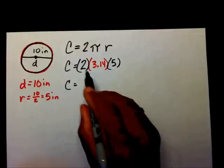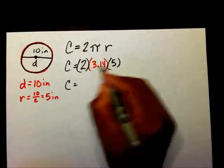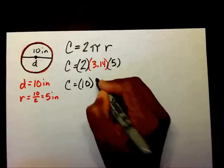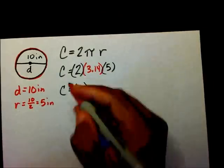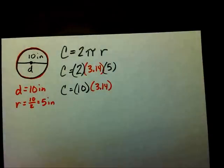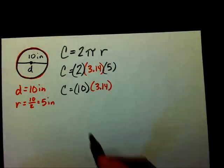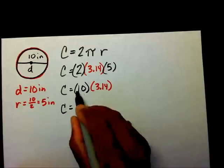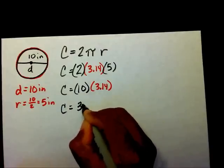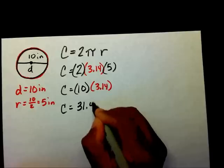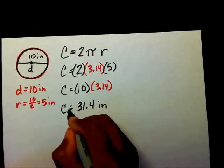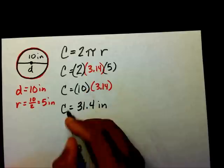I'm going to multiply my two whole numbers: 2 times 5 is 10. Then I bring down 3.14. So 10 times 3.14 is 31.4 inches. Since I used 3.14, this is an approximation.